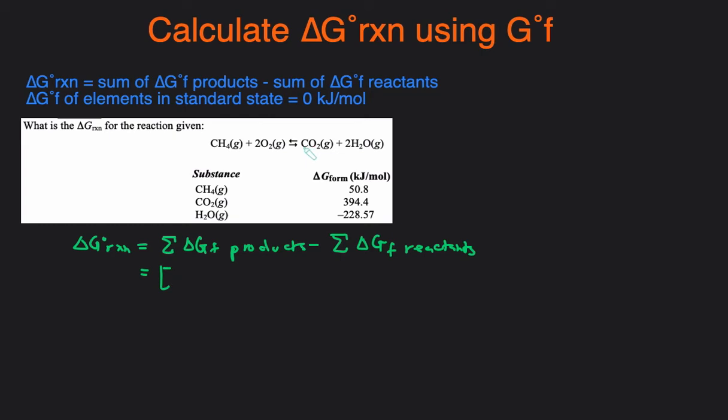On the product side we have one CO2 and two H2O. So it will be the value of CO2 which is negative 394.4 plus 2 because we have two H2Os, value of H2O which is negative 228.57, and then subtract the values of the reactants.